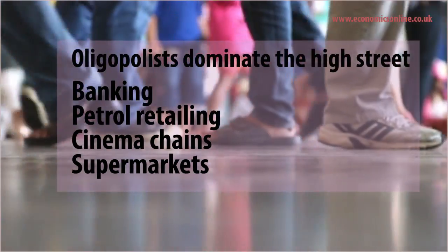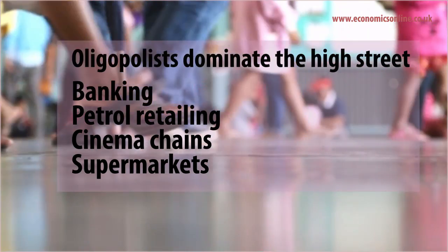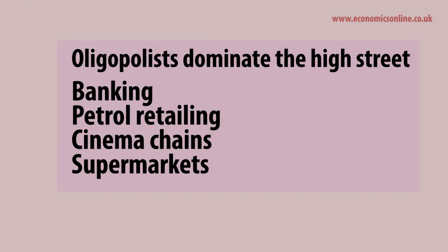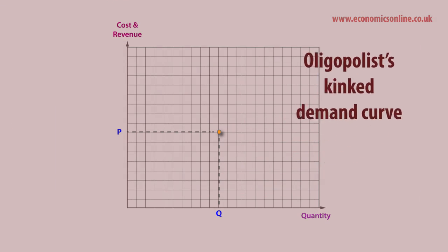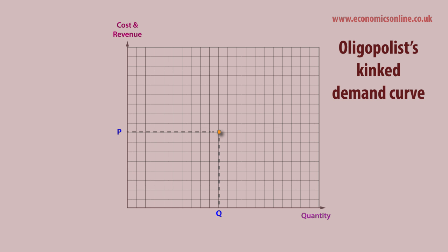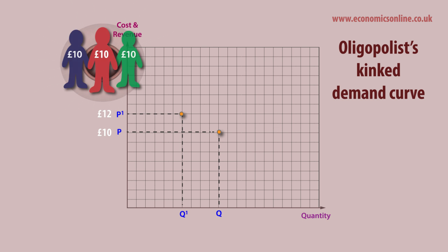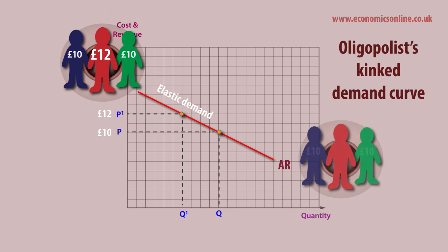Interdependence can be understood by looking at the oligopolist's kinked demand curve. If a firm raises price, say from £10 to £12, rivals will not follow suit as they will gain an advantage by holding their price constant. Hence the price-raising firm loses market share and loses revenue.